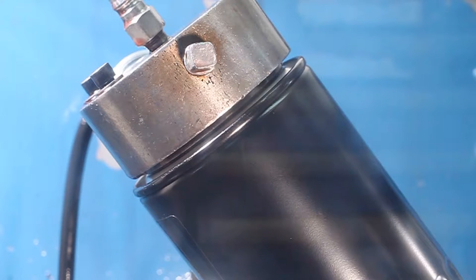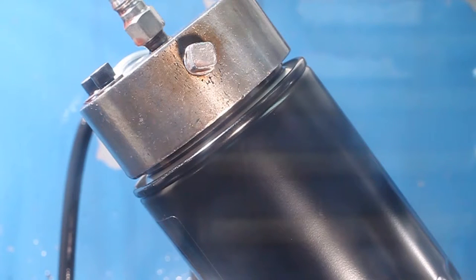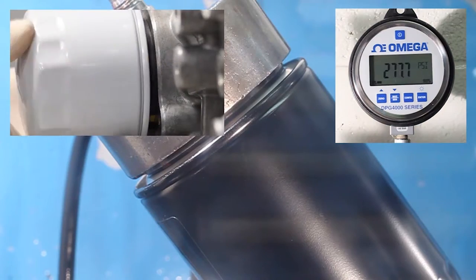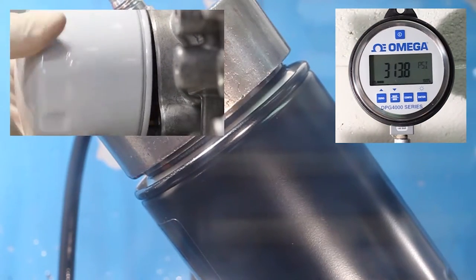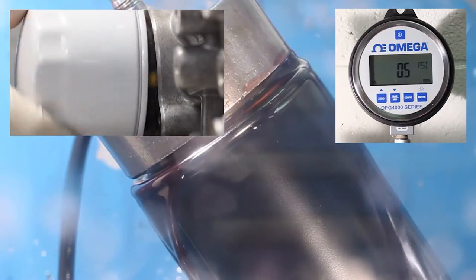Spin-on filter gaskets may become displaced for several reasons. The two causes that are most frequently encountered are incorrect filter installation and an over-pressurized lube system.